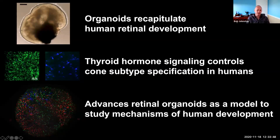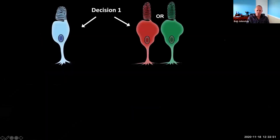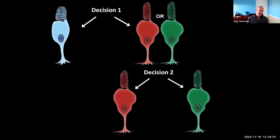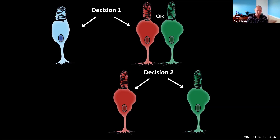All right, if there are no other questions, I'll move on to the next section. What I've talked about is decision one — the story we published a year or two ago. Now I'm going to tell you about decision two, and this is the real reason we got into this system because this is human-specific. Our goal in my lab is really to address human development. There are many amazing colleagues doing fantastic work in mouse and zebrafish, but we take advantage of this particular system to address questions that are human-specific.